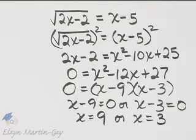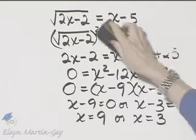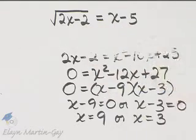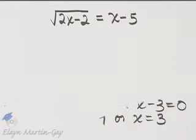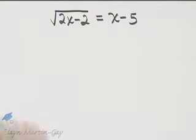So notice we have two proposed solutions. Keep those in mind and let's go back to the original equation because once again, radical equations we must check. So we're going to check 9 and 3.